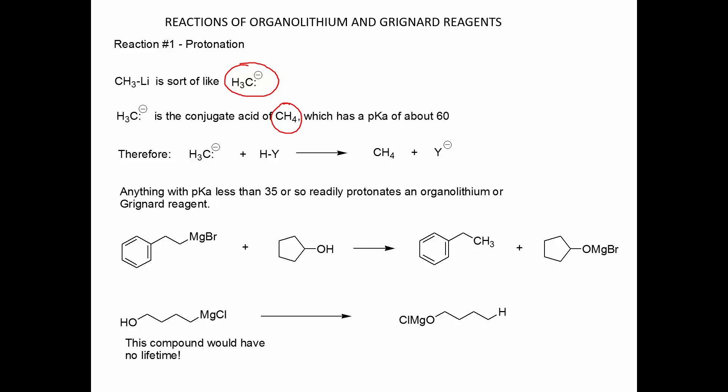Anything with a pKa of less than 35 or so readily protonates an organolithium or a Grignard reagent. So if we take the Grignard reagent shown here on the left and treat it with an alcohol — cyclopentanol shown here — we would turn the carbon-magnesium bond into the carbon-hydrogen bond. Hydrogen replaces the metal, and the alcohol turns into the magnesium alkoxide.